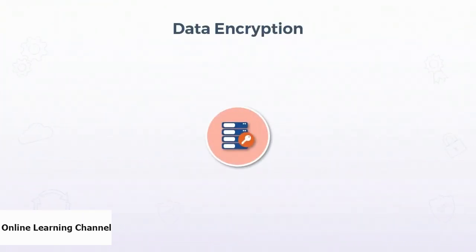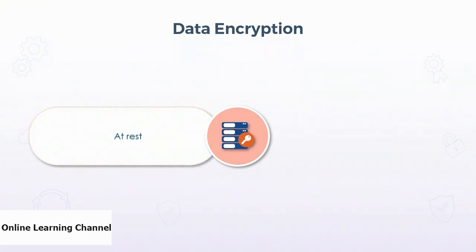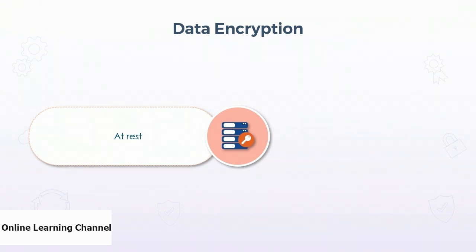Encrypting the contents of an Azure Blob Storage account can happen in two operations. Data written to the account is automatically encrypted at rest using 256-bit AES and is FIPS 140-2 compliant. This cannot be disabled and requires no manual intervention or configuration by the user. Encryption at rest can be performed using a customer-provided key if security requirements do not support using the default platform-provided keys.